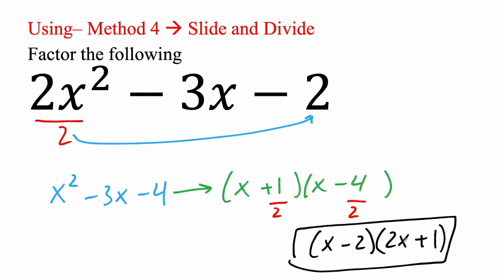We can just double check. x times 2x is 2x squared. It matches. x times 1 is 1x. Negative 2 times 2x is negative 4x. So negative 4x plus 1x is negative 3x. So it matches. Likewise negative 2 times 1 is negative 2. And so it's a match.